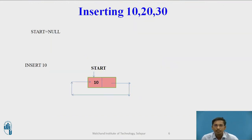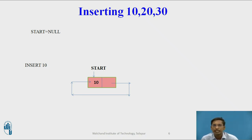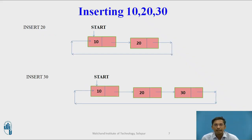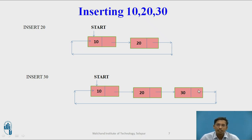Suppose I want to insert 10, 20, and 30. Initially, start has null. After inserting 10, then 20, then 30, the singly circular linked list will look like this: start is pointing to the first node 10, and 30 is the last node. The last node's next pointer will point back to the first node.